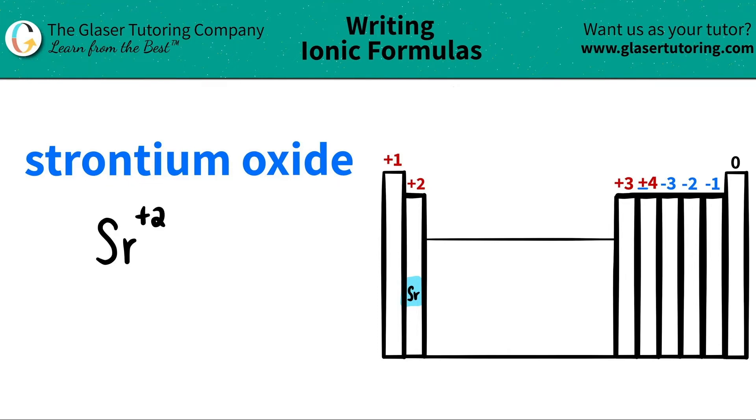Oxygen turns into oxide when it gets named and oxygen is right over here. It's represented by an O. And oxygen being in this group loves to have a charge of a negative 2. So I'm just going to write that out. I have oxygen and now I have a negative 2 charge.